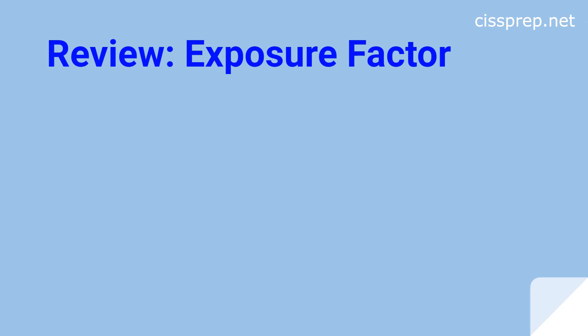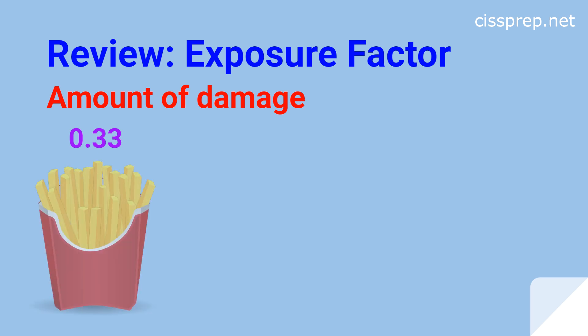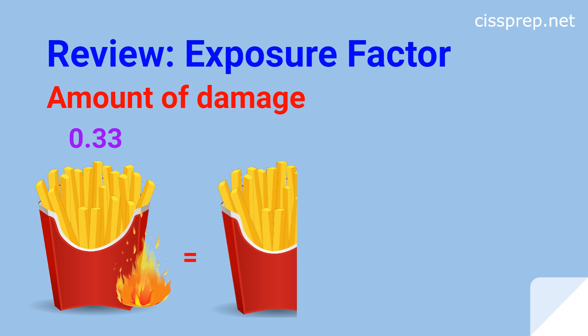Exposure factor isn't really new, but there is a term you should be familiar with called triply redundant. Exposure factor has to do with the amount of reduction to the asset's value or the amount of damage. For example, an exposure factor of 0.33, or one-third, or 33%, would mean that the asset's value would be reduced by one-third if a risk event were to occur. An exposure factor of 1, or 100%, would indicate complete destruction of the asset.